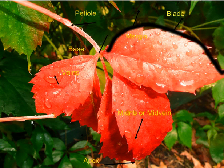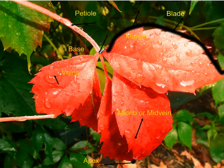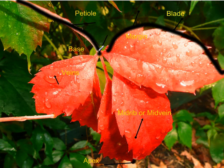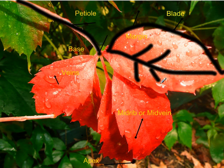So those are all the parts of the leaf. Now let's do a quick review. A for apex — that's the point right here. Go to the bottom, and that's B for the base. On the base, we have the petiole. Down the middle, we have the midrib or the midvein. From there, we have all the different veins coming out of the leaf. And then we have the whole section, which is the blade. There you have it — the parts of the leaf.